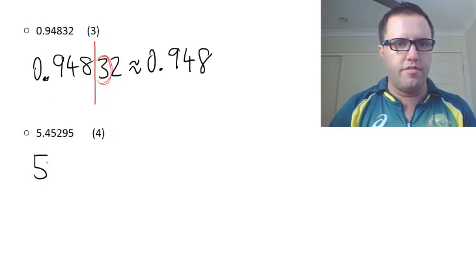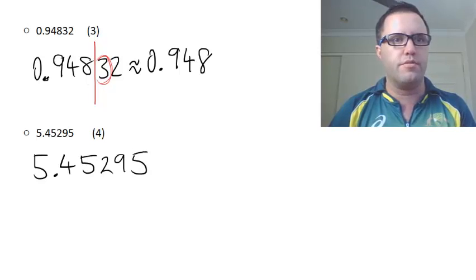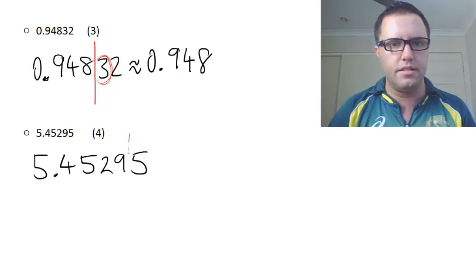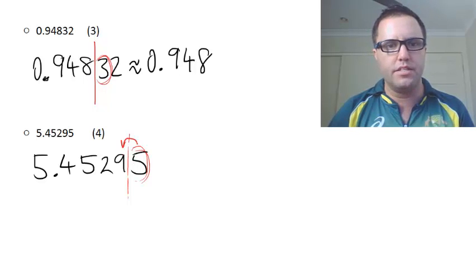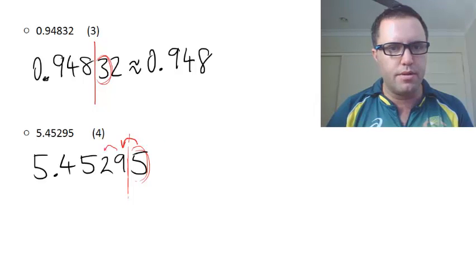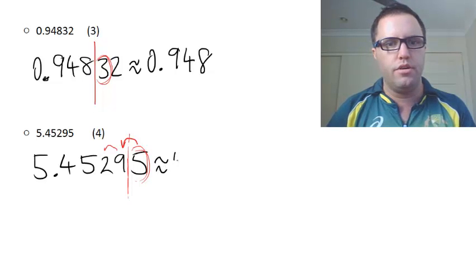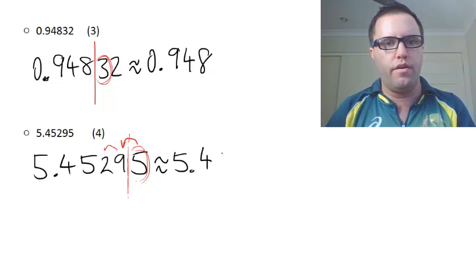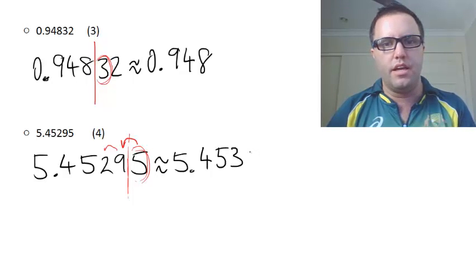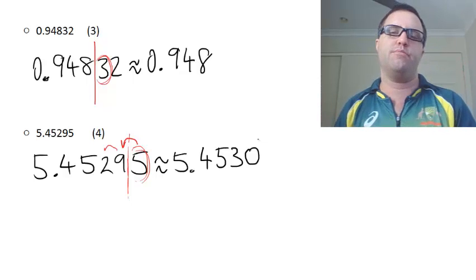Last one, 5.45295. Round this to four decimal places. So here's like a case one, but with a difference. But look at that number here. It's a five. So that means we're going to be adding one to this number here when we cut it off. But that nine plus one is 10. So that means you end up adding another one to this one here. So this will now be approximately equal to 5.453. And we'll put a zero here to show that we're rounding that out off to four decimal places.